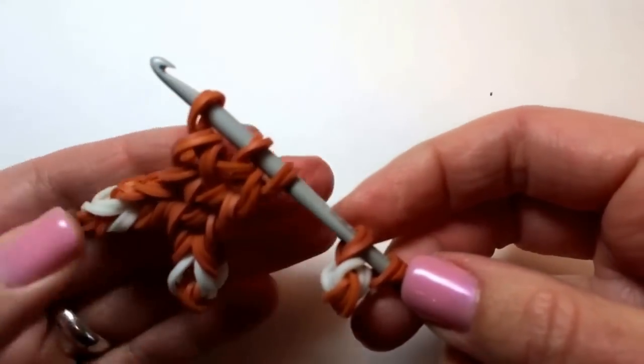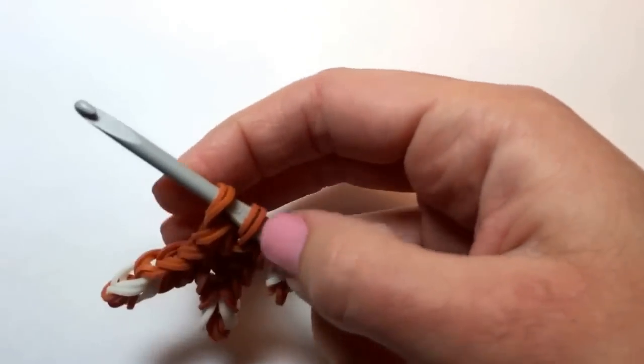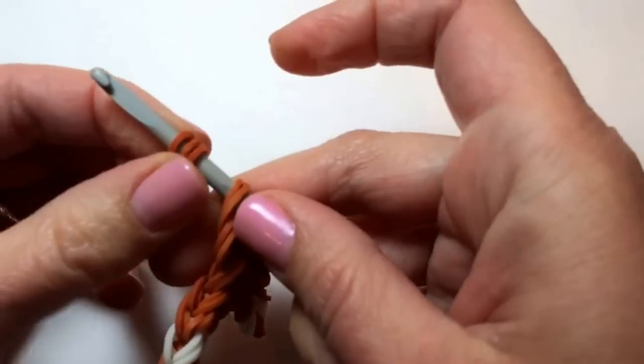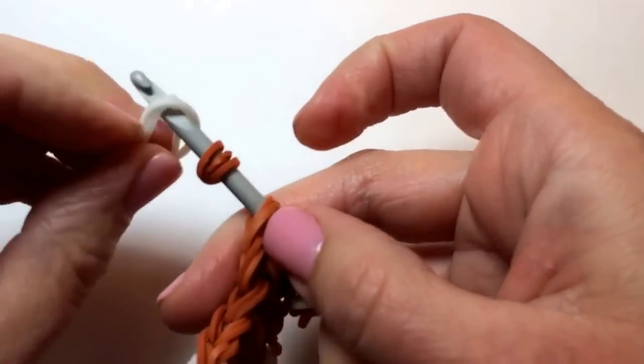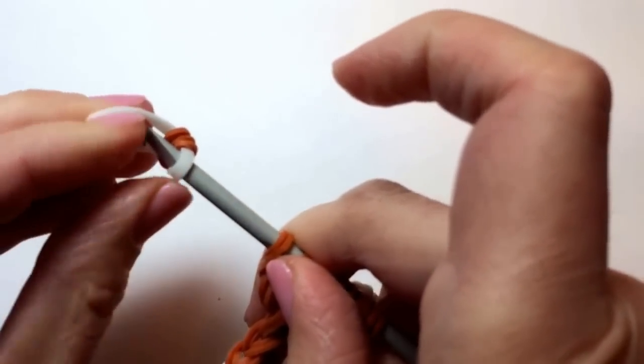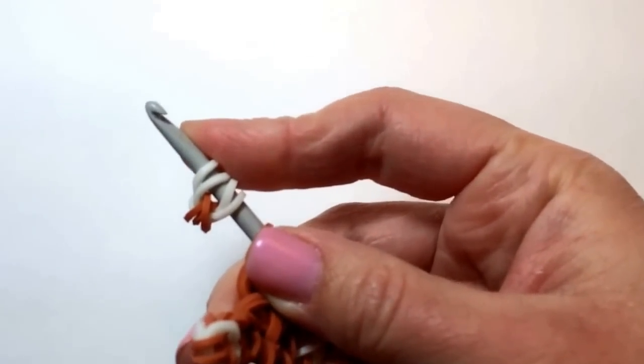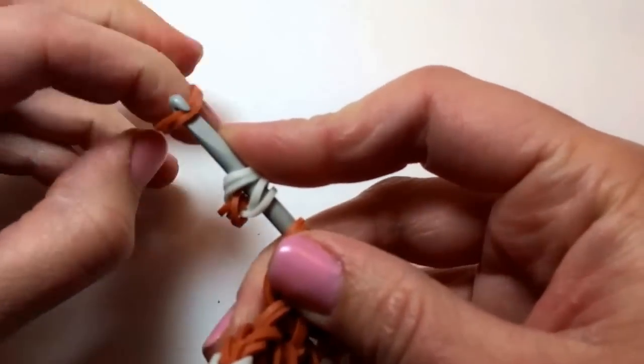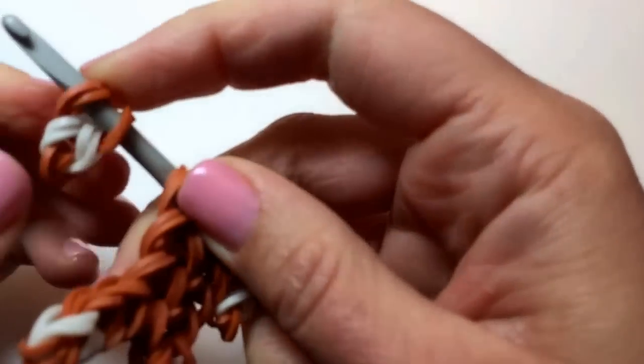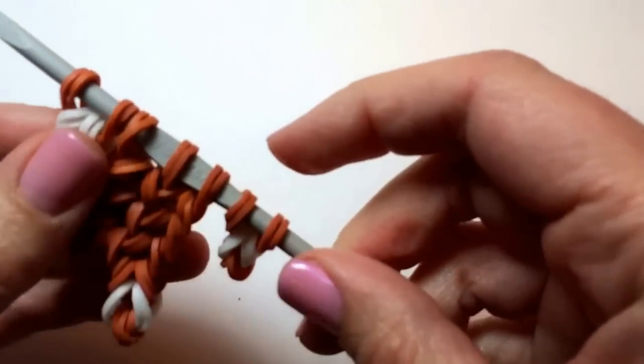We're now ready to make the second arm. So we'll slide the body to the side for the moment. Wrap around three times. Two white. Two brown. You now have two arms and your body and we need to connect it together.